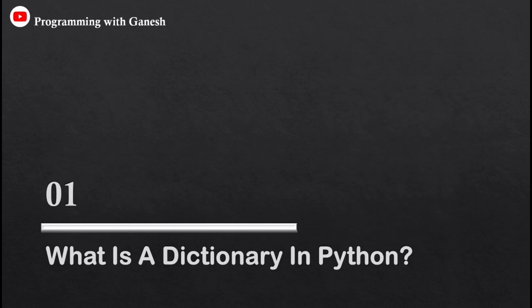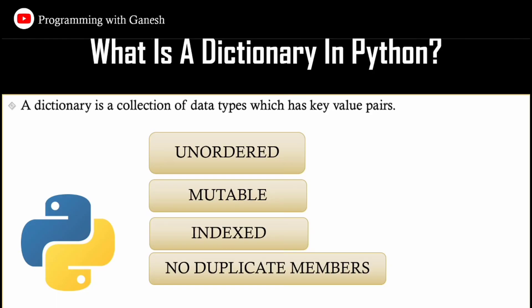First, we are going to see what is a dictionary in Python. A dictionary is a collection of data types, similar to the list, tuple, and set, but it has key and value pairs. That means we are going to store a key and value in the dictionary.